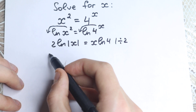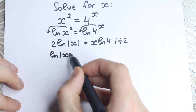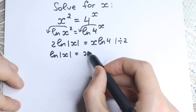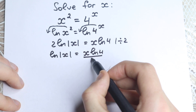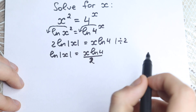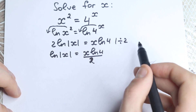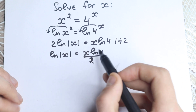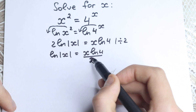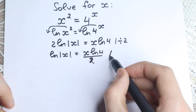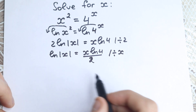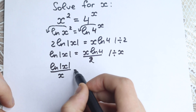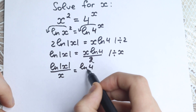If we divide by 2 we have natural log of |x| on the left, and on the right side x times natural log 4 over 2. We still have the variable x on the right hand side, so let's divide both sides by x. If we divide both sides by x, we have natural log of |x| over x equals natural log 4 over 2. It's hard to solve this by inspection because we have natural log x inside and x in the denominator.